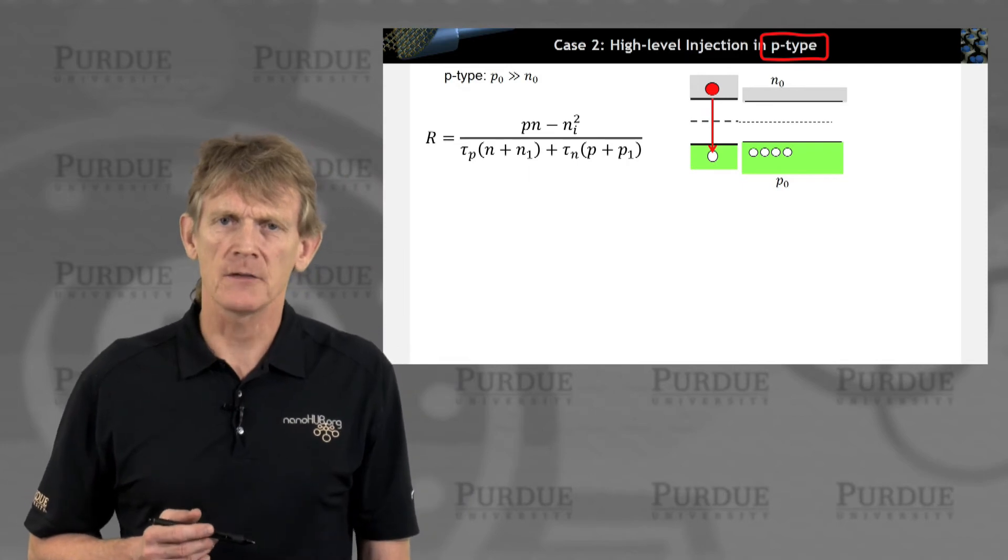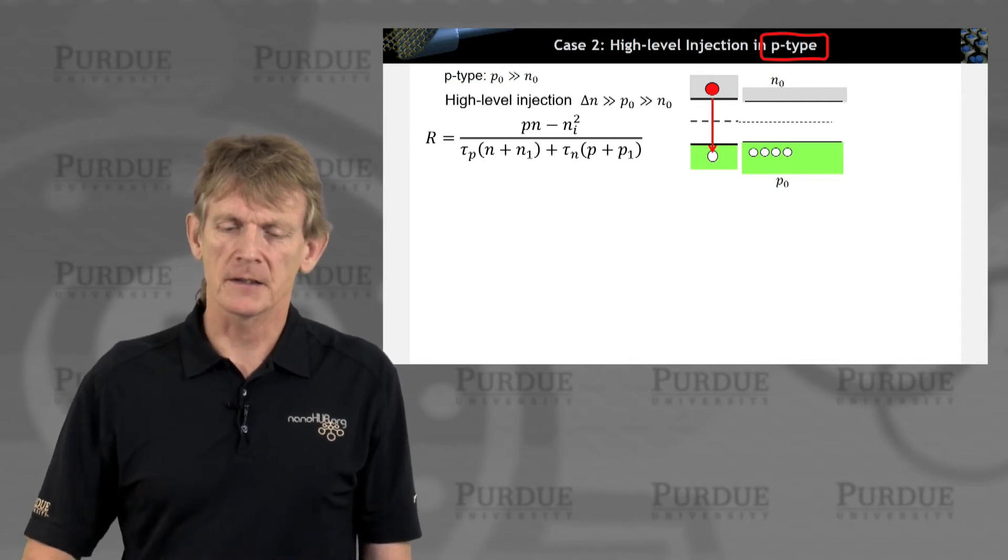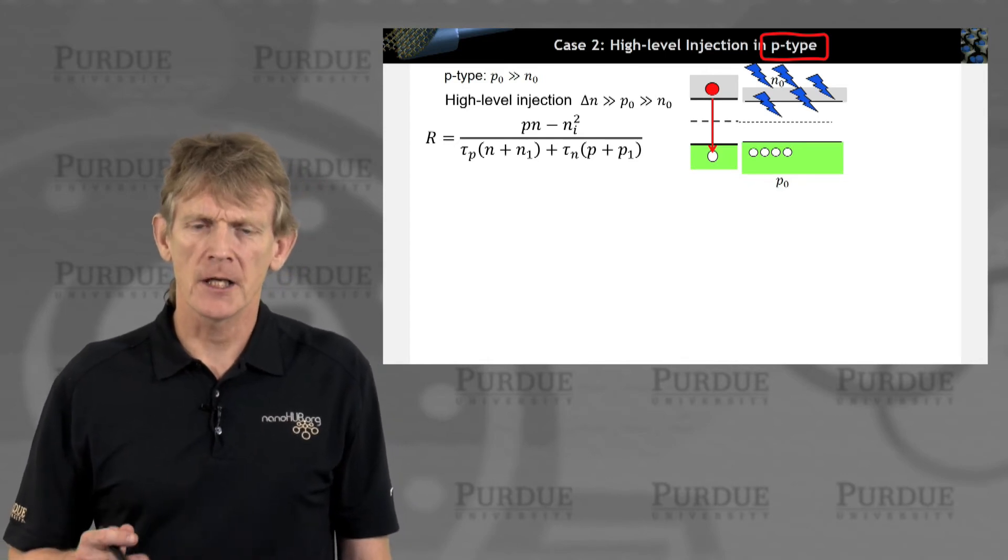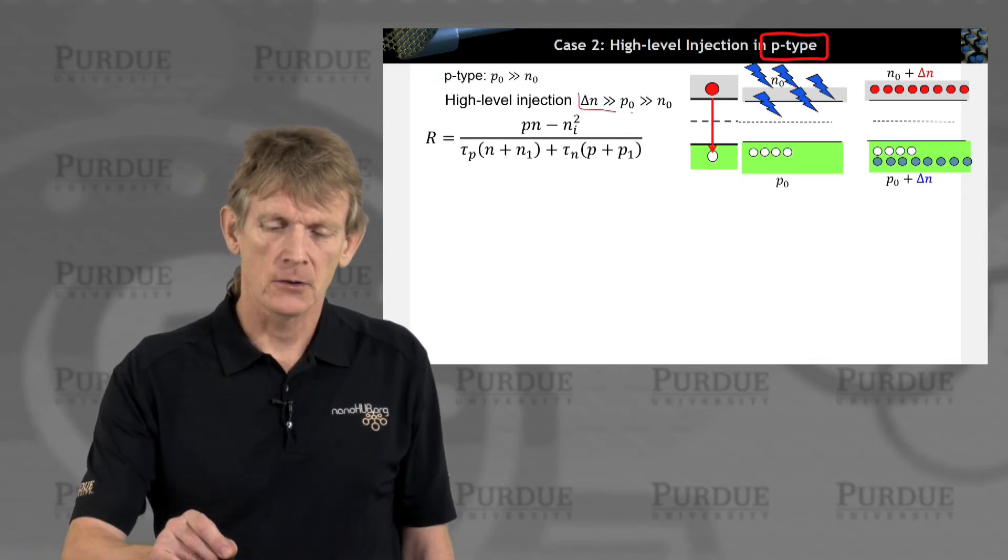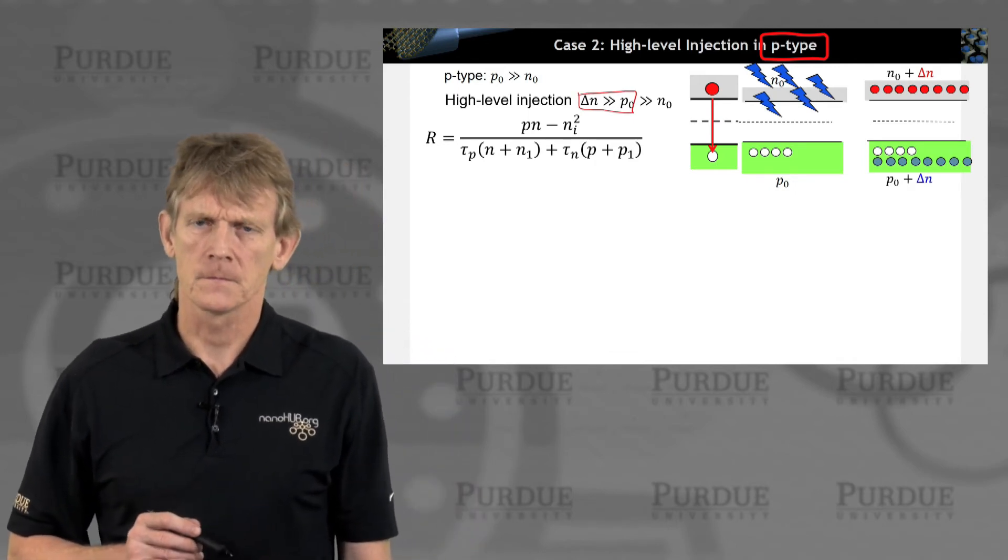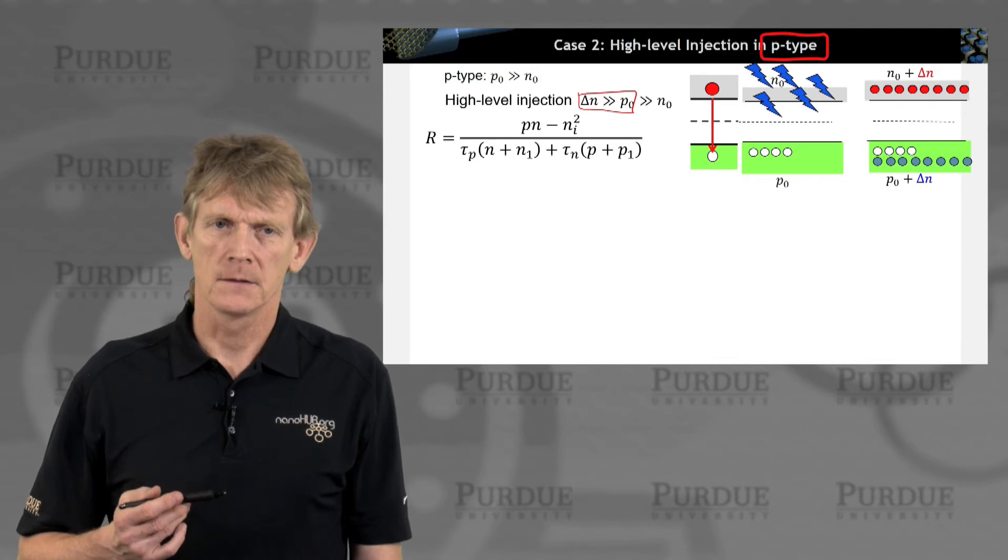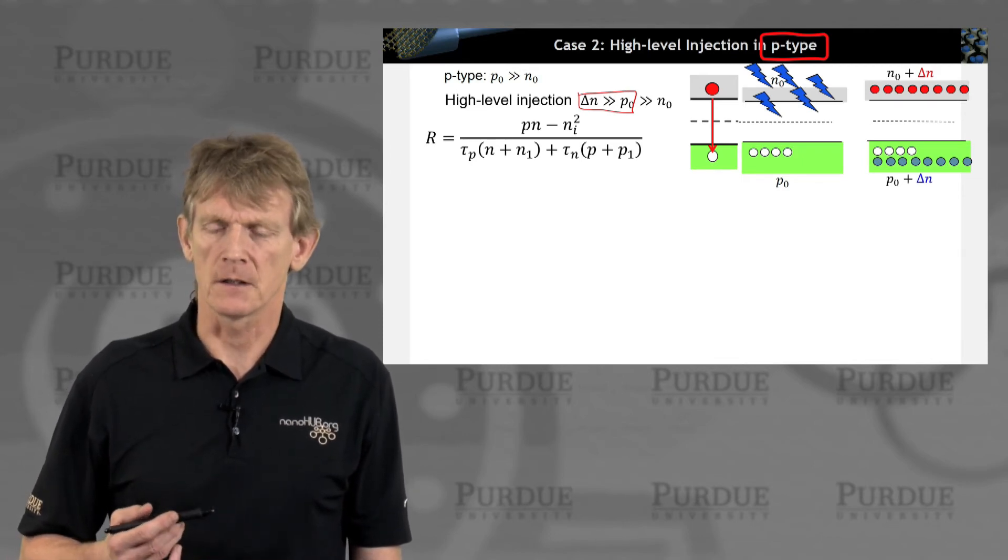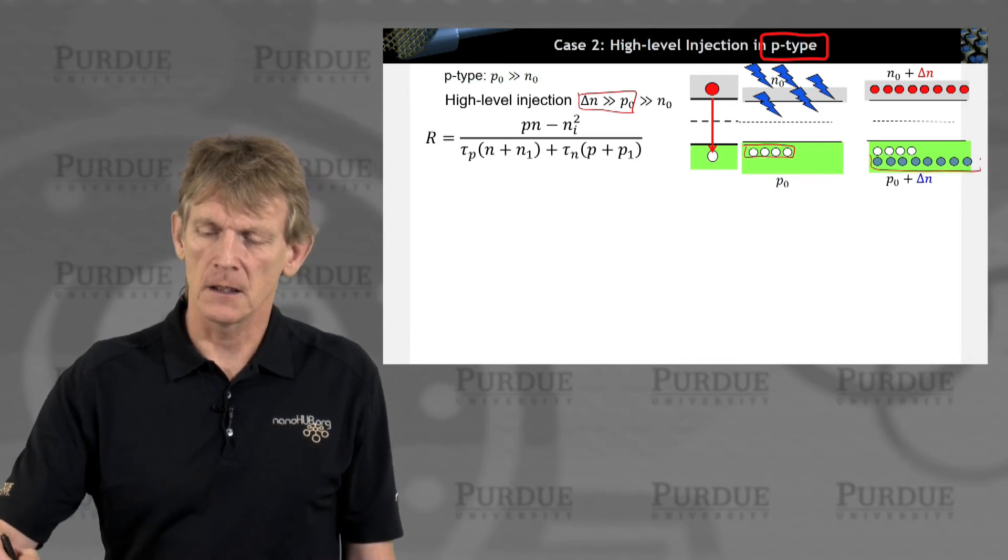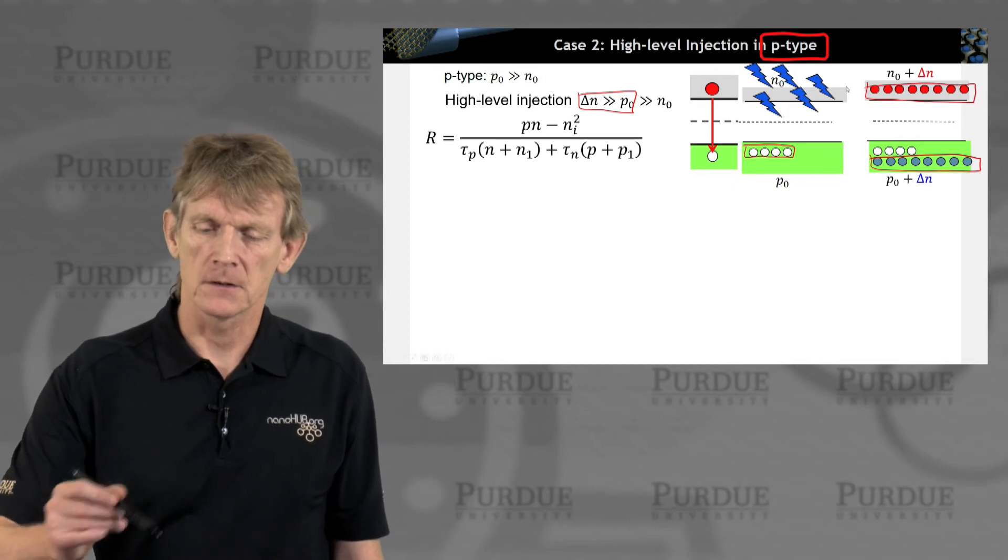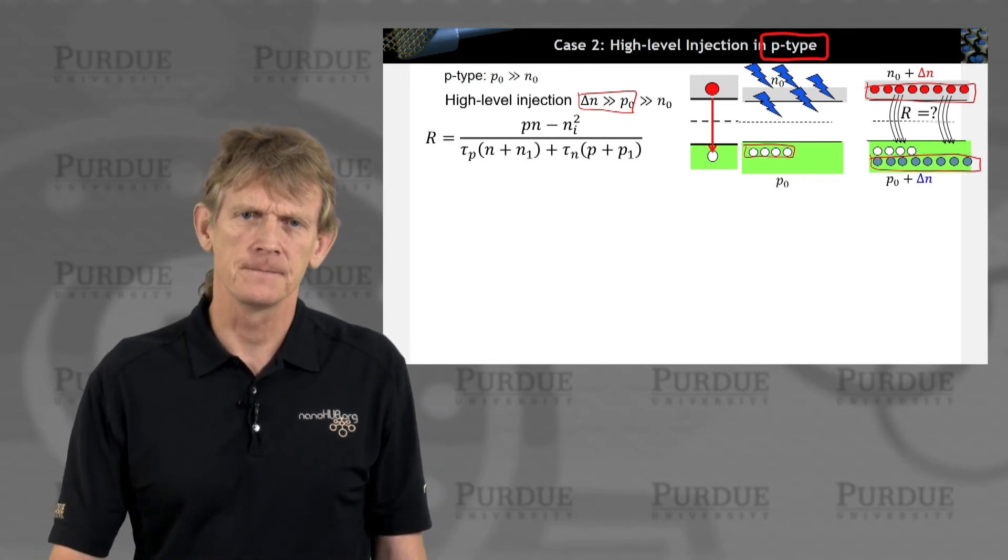All right. Now let's take another case, the case of high level injection. Starting out again from p-doped, and what we're doing now is we're injecting the system very hard. So very high injection means that the number of carriers we are injecting is now comparable or larger than the original doping. So we're flooding the system with additional carriers, away from, far away from equilibrium, really far away. We create, if I said, well, we have p-doped, we have some number of dopants here, we create a larger number of holes and electrons up here. And there's going to be lots of recombination, and we're asking ourselves, what is the recombination rate?